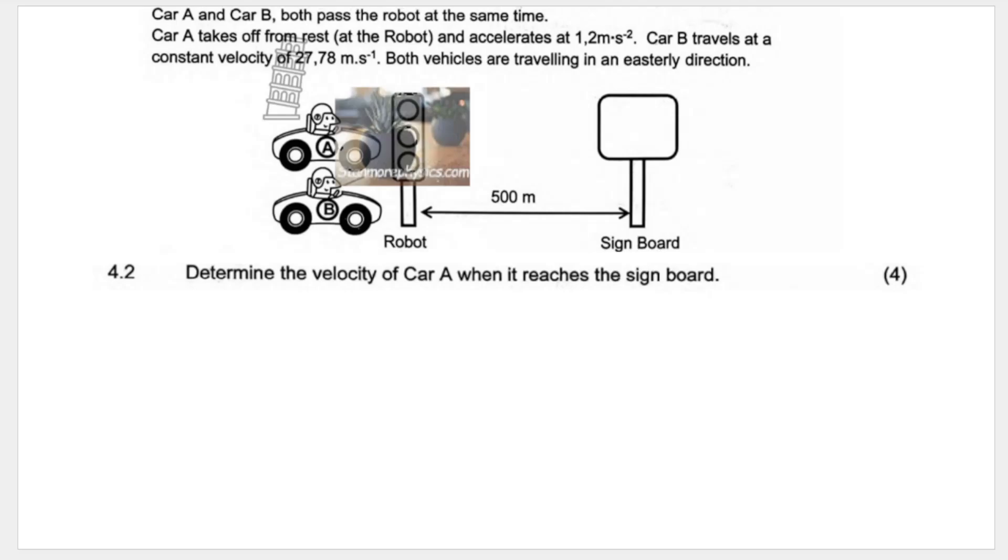4.2 says determine the velocity of Car A when it reaches the signboard. Again, we list what we already know. That's what we know already from Car A. And we're looking for the velocity when it reaches the signboard. So that's VF.